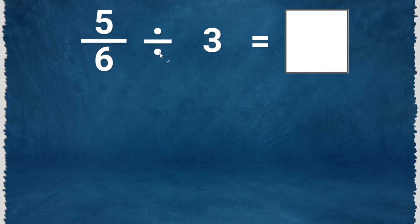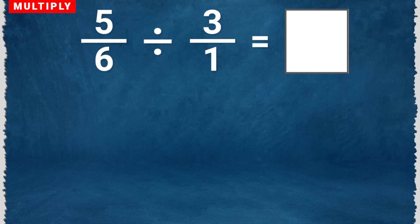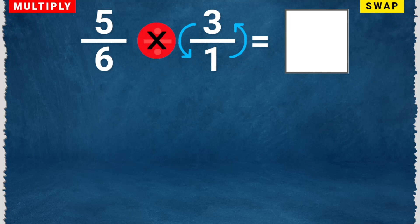5 over 6 divided by 3. Let's rewrite 3 into a fraction, so this will become 3 over 1. Then multiply — change this to multiply. Swap the numerator and denominator of the second fraction. So this will become 1 over 3.